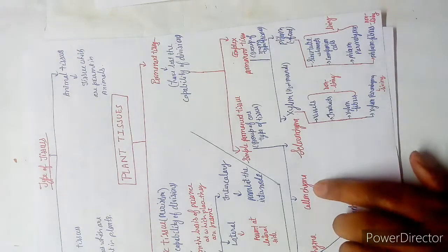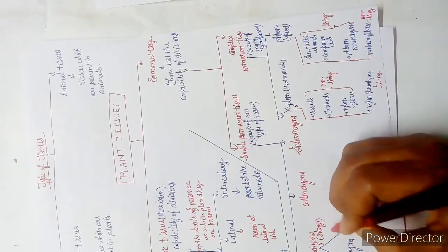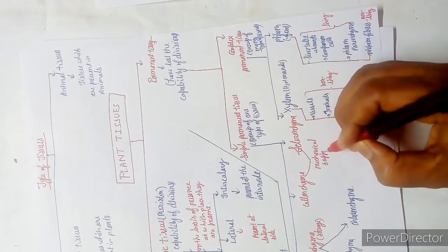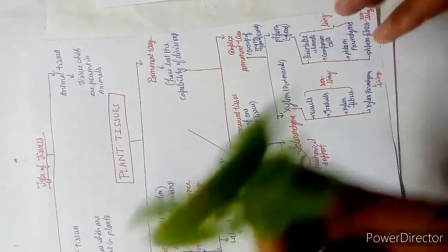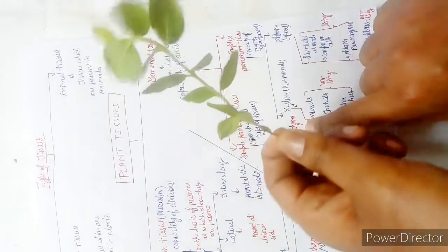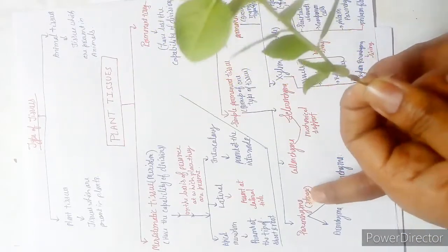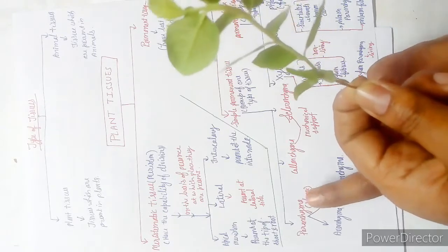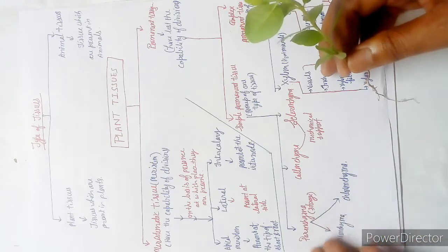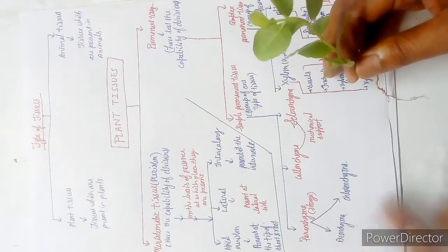Simple permanent tissues include parenchyma and collenchyma. The main function of parenchyma is storage of food — for example, fruits store fructose in parenchyma cells, which we eat. The function of collenchyma is mechanical support — it provides support and keeps the plant standing upright.